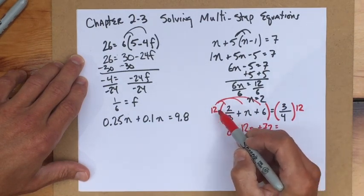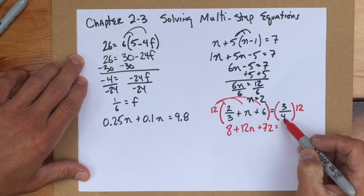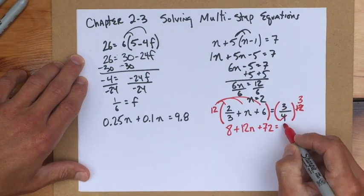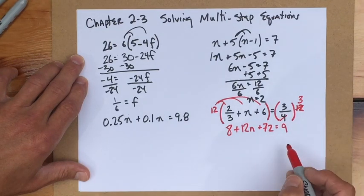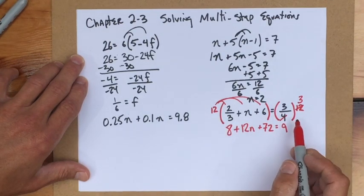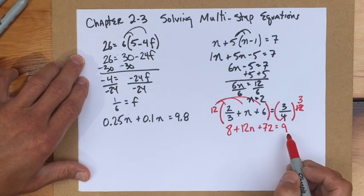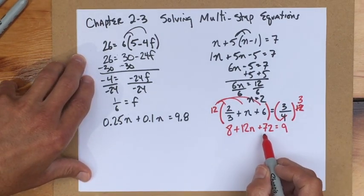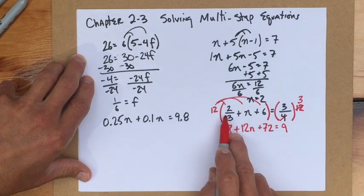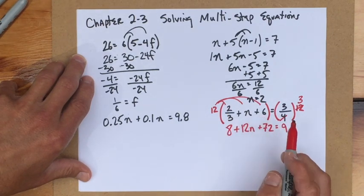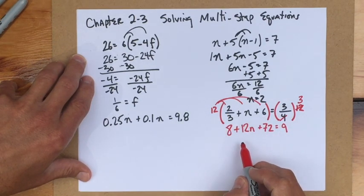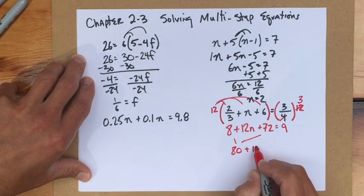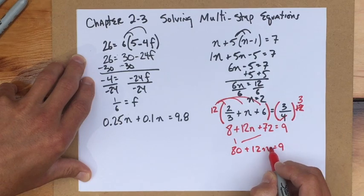On the other side, if you didn't follow that fraction thing, here it comes again. I'll do it a little slower. 4 goes into 12 3 times. 3 times 3 is 9. Now, I haven't really changed the problem in any manner. I've just made it look different. But these are equivalent equations. So here's now the time when I'm going to combine like terms. But instead of adding 2 3 and 6 and getting a mixed number, I'm just going to add 8 and 72. And that makes it very easy to work with. 80 plus 12n equals 9.